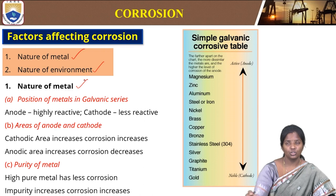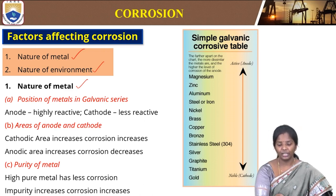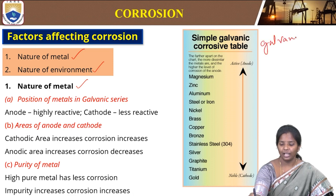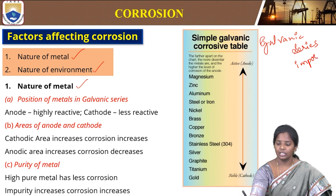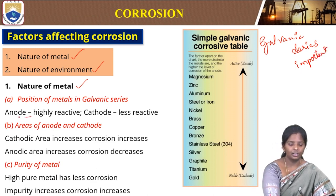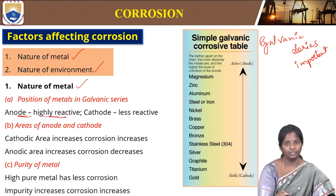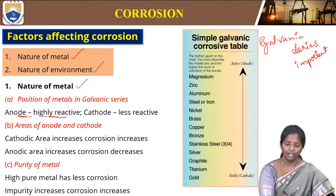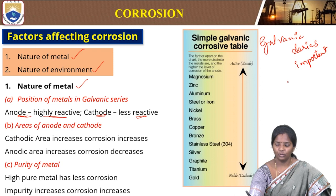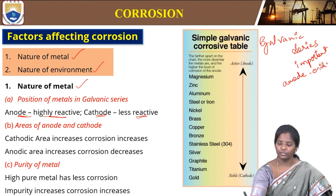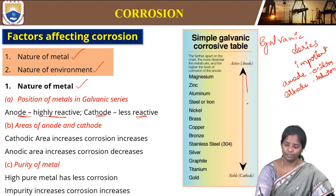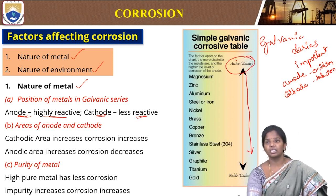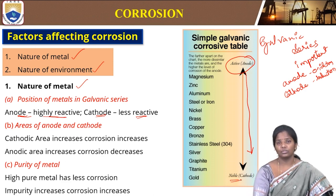Considering the nature of metal, the placement of metal — where the position of metals in the galvanic series — is also important. Galvanic series is important because when a metal is highly reactive, it forms an anode, and it is a cathode when it is less reactive. What happens at anode? Oxidation. At cathode? Reduction. Active metals are anodes and less reactive metals are cathodes. That is why when we use gold, platinum, or silver, they are less reactive and we are able to wear them even in different environments.